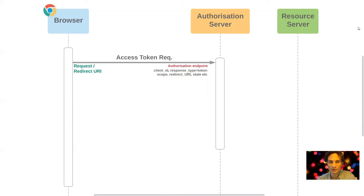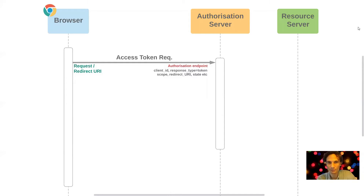A state parameter is also often used here. As with the web server flow, it can be used in a couple of ways: first, as a security mechanism to help the browser correlate that the redirect with the access token coming back from the auth server was made in response to the original request, by matching a random value added as a fragment or as the state parameter.